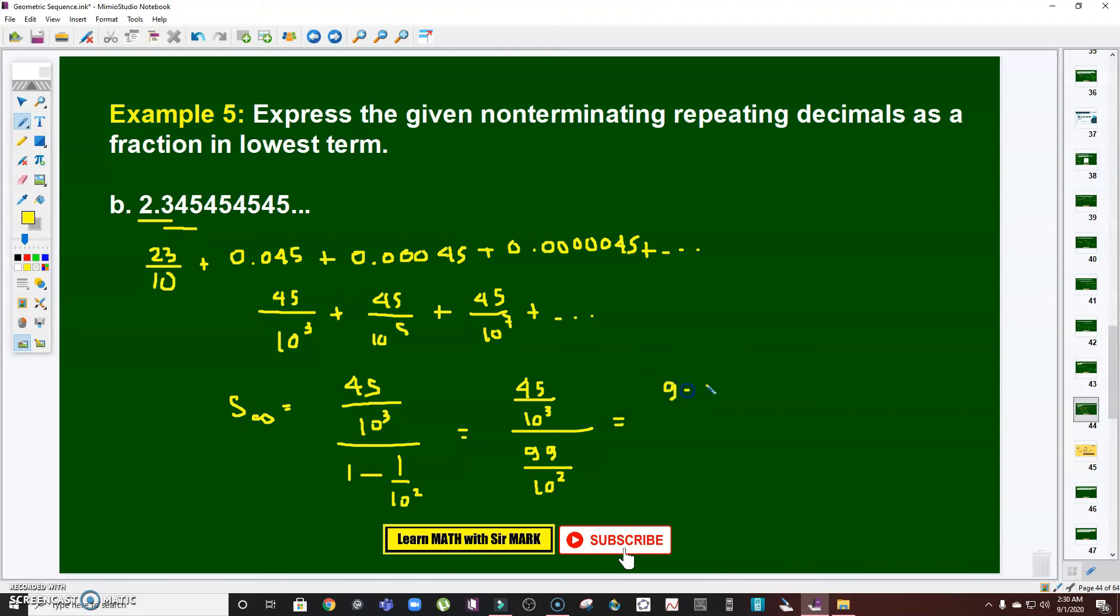45 is 9 times 5 over 10 squared times 10, all over 9 times 11 over 10 squared. So you will see here, the 10 squared will cancel, and the 9 will cancel. What will be left here is 5 over 110.